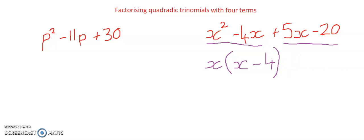Likewise I am able to factorize a 5 out of my second equation and that becomes 5 in brackets x minus 4.